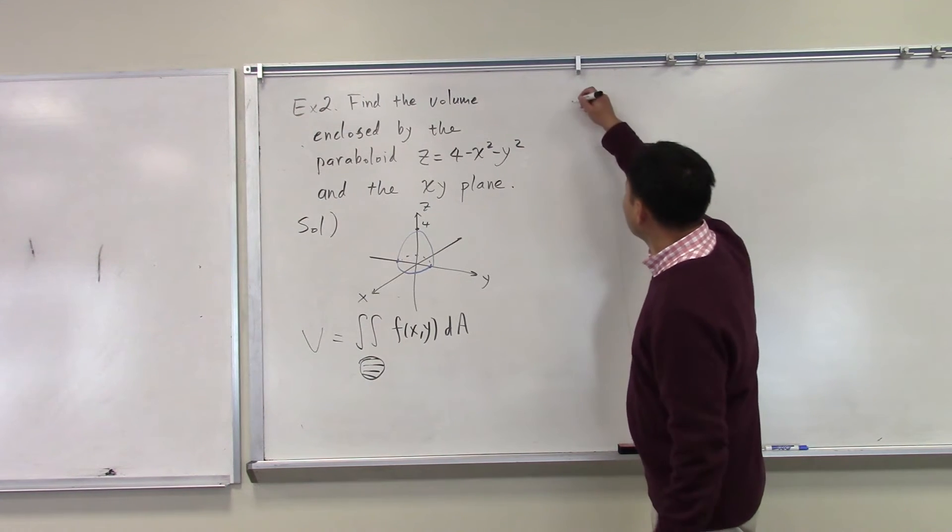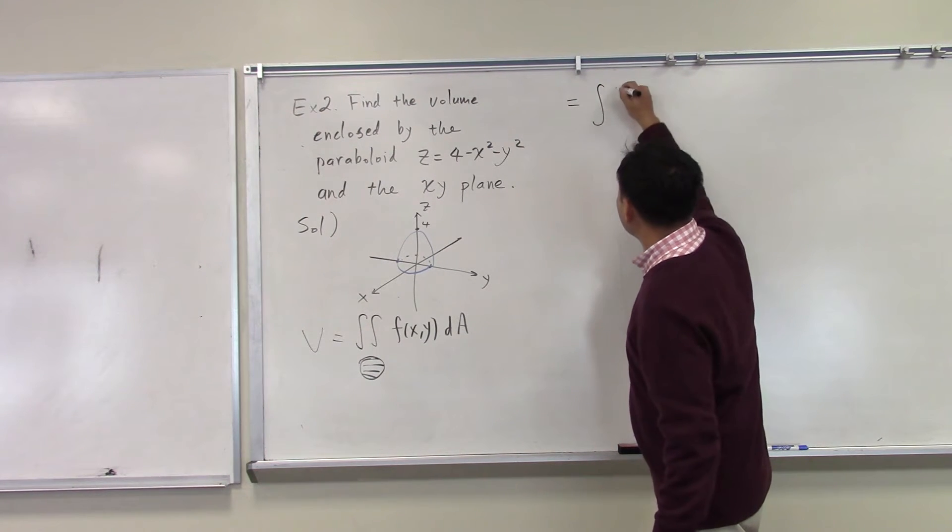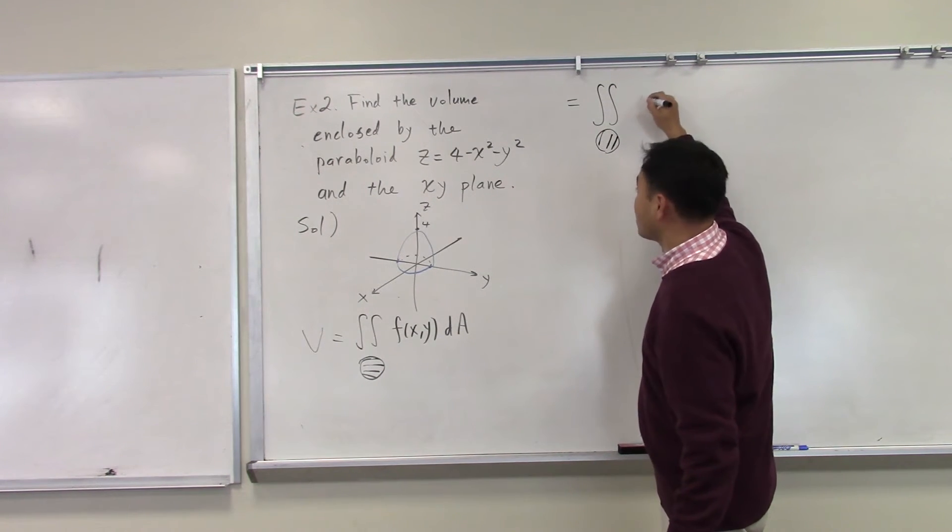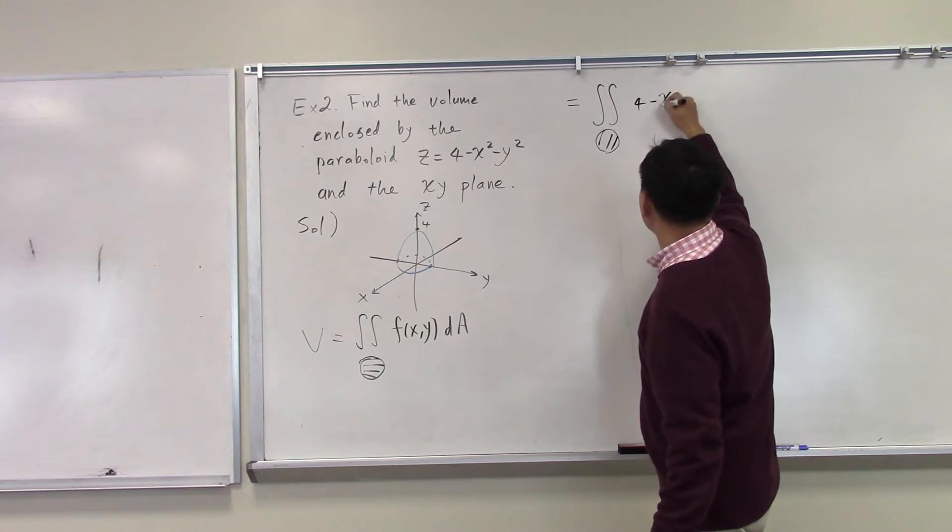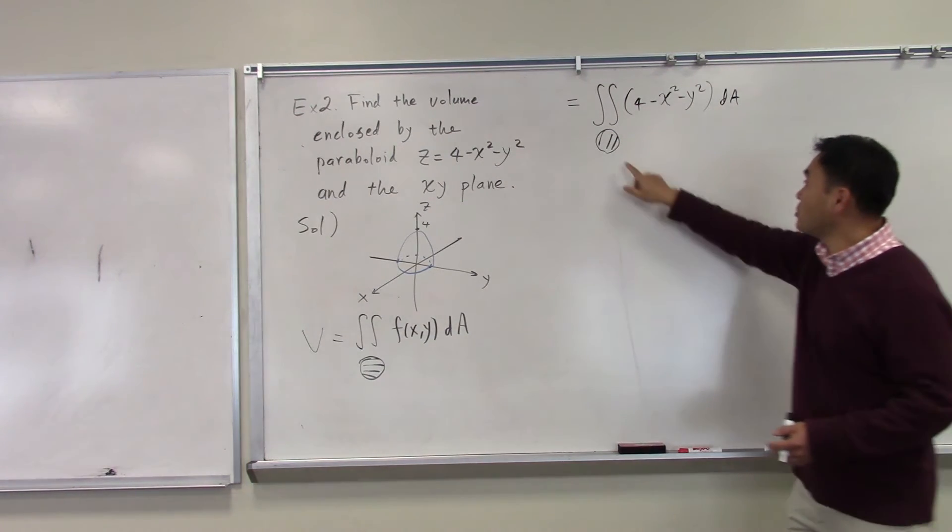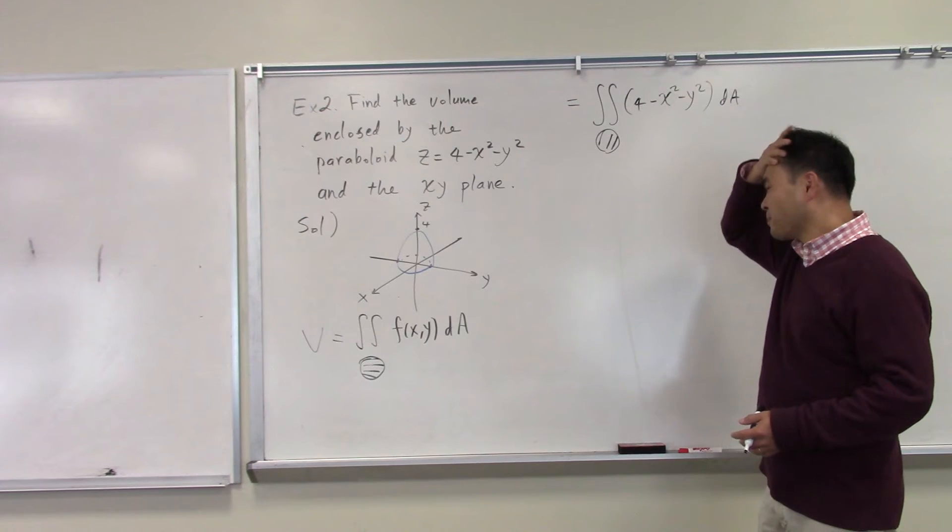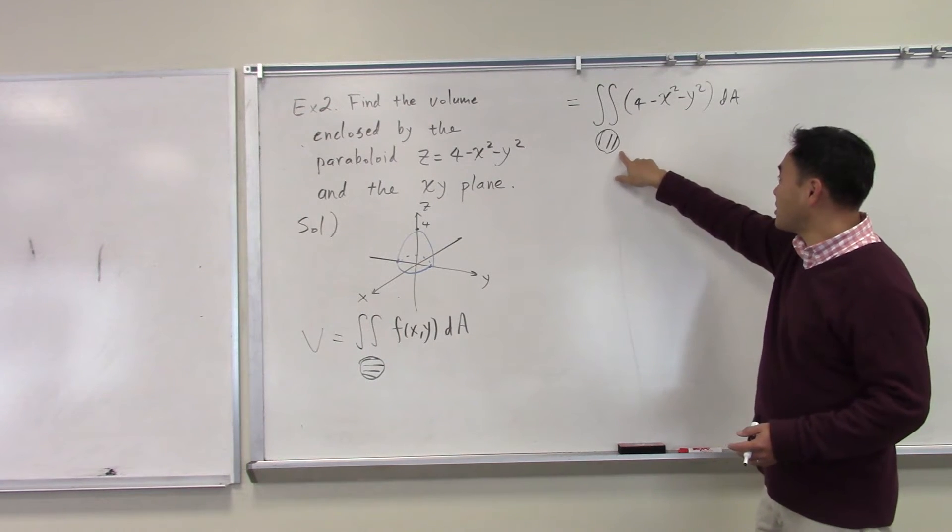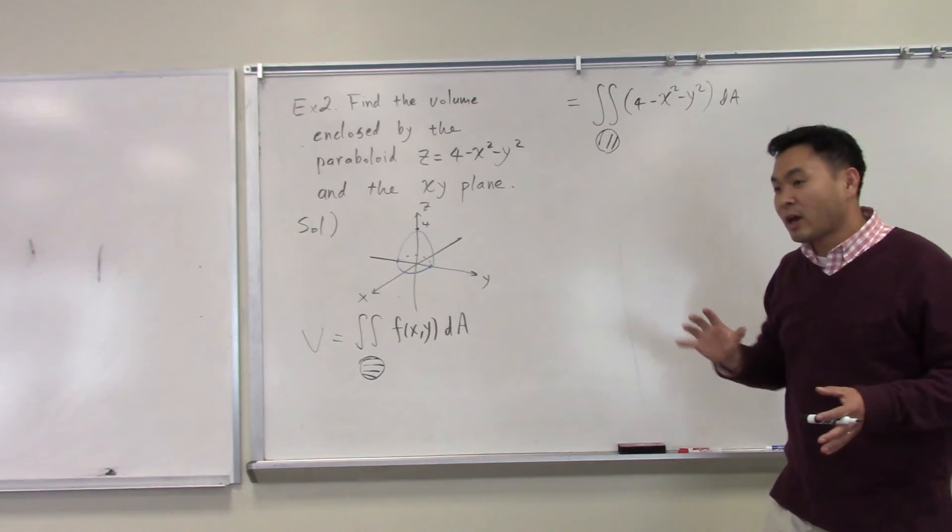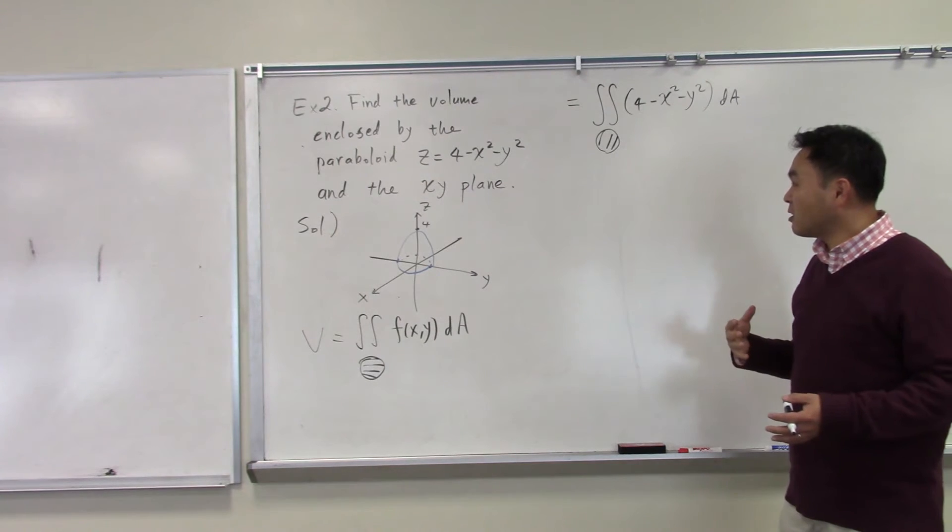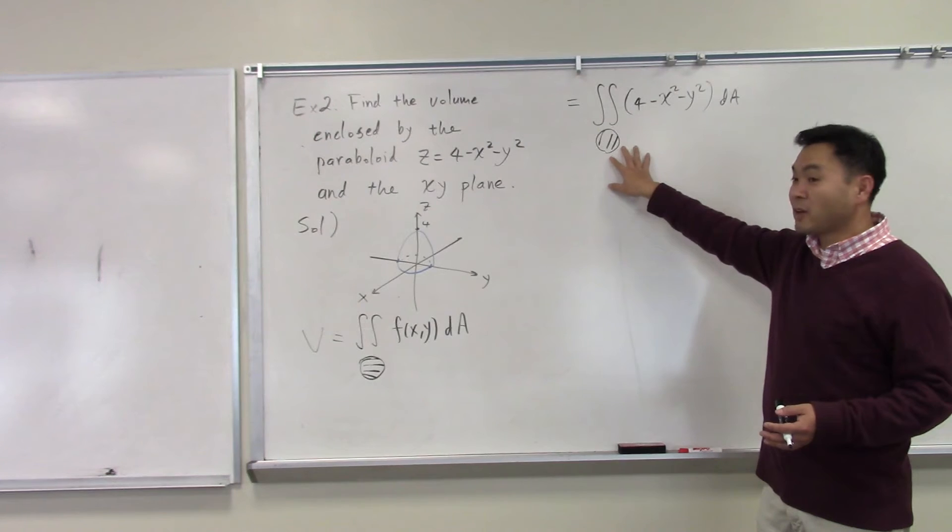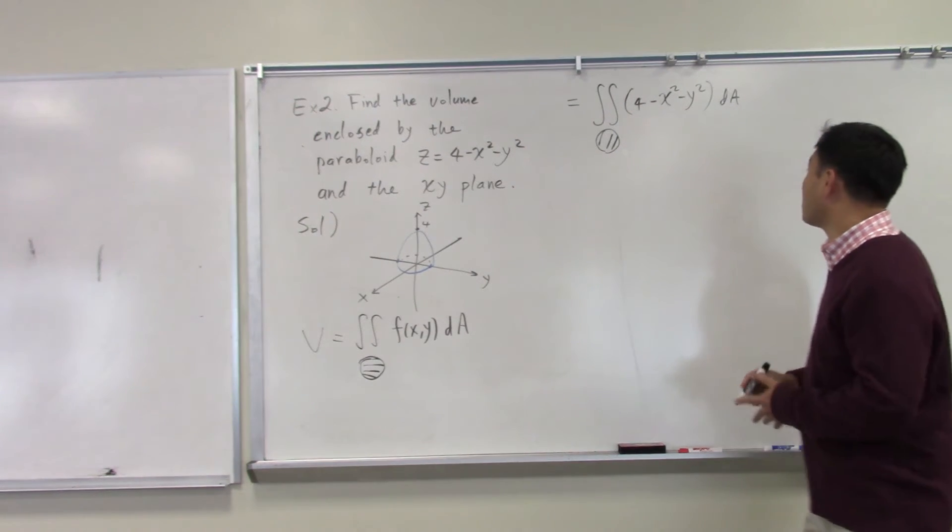Now if I write this more explicitly by plugging this in as 4 minus x squared minus y squared dA, and then you think about what to do with this domain, you quickly realize that polar coordinate is the better choice to do it here because it's circular. Any time if you have a circular region or a region in the base that's easily described by polar coordinates, it's better if you use the polar coordinate system. So let's try that.